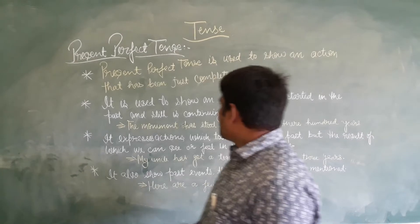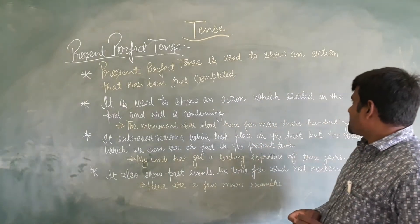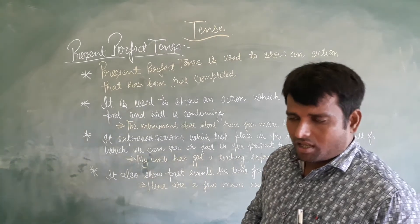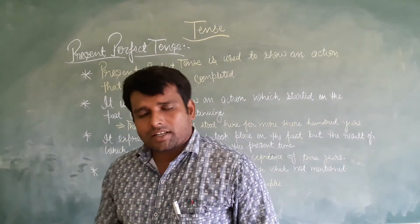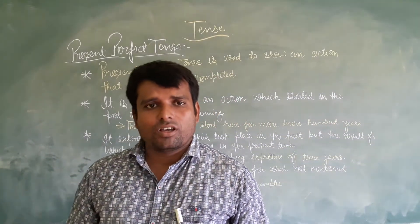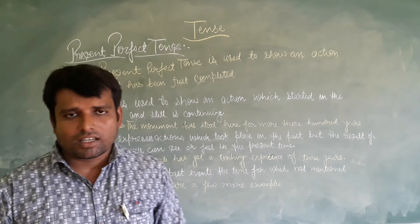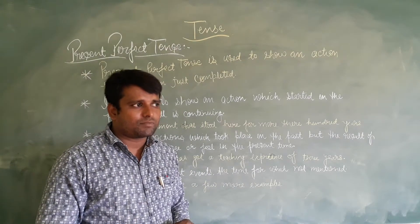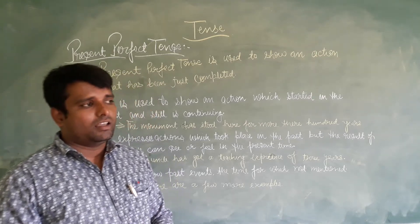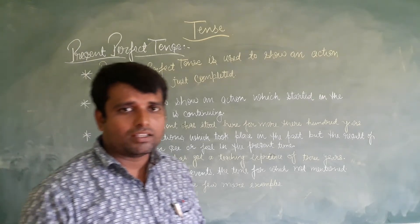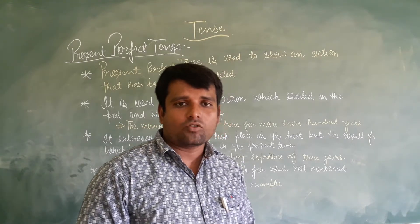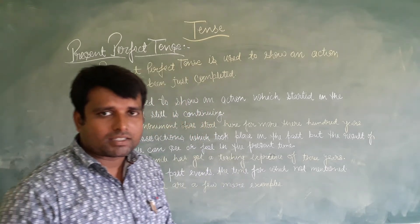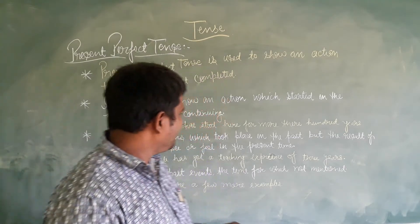It is also used to show an action which started in the past and still is continuing. Aise kariyuk ko express karne ke liye kiya jata hai jho past tense mein start huwa hai lekin abhi bhi jari hai. Aise kariyuk ko express karne ke liye bhi present perfect tense ka prayog kiya jata hai.